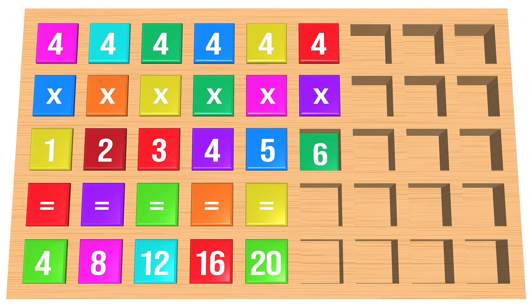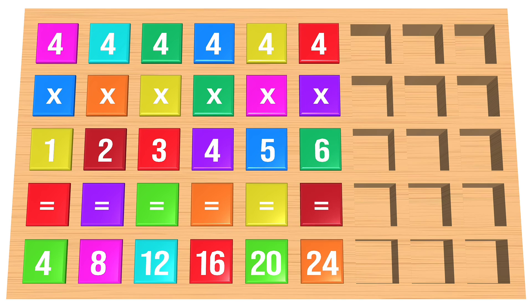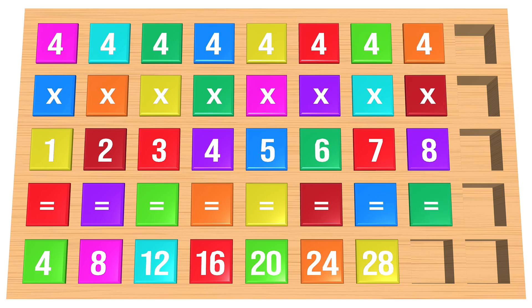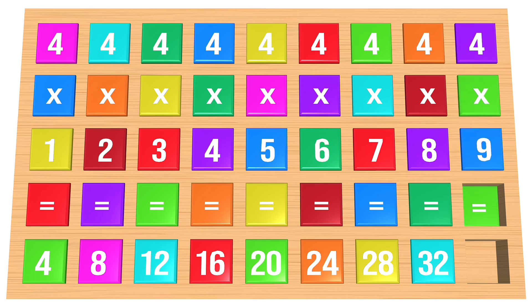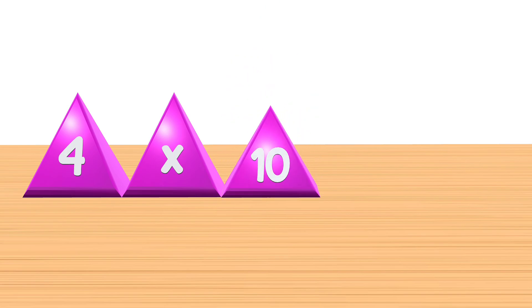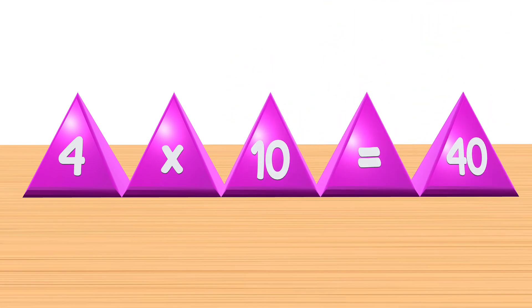4 times 6 is equal to 24. 4 times 7 is equal to 28. 4 times 8 is equal to 32. 4 times 9 is equal to 36. 4 times 10 is equal to 40.